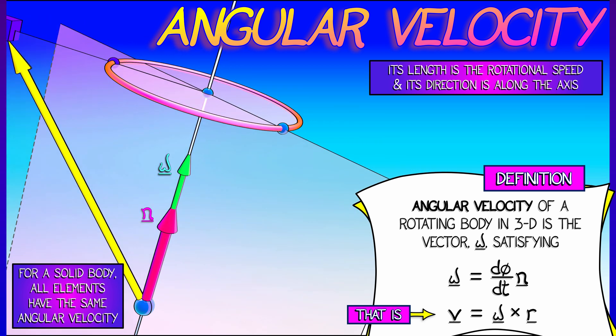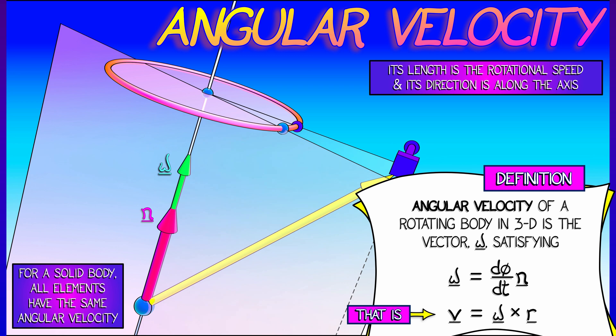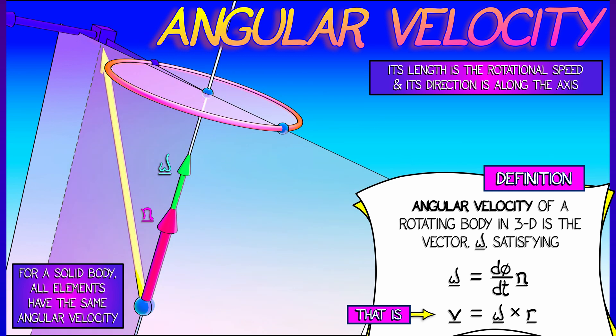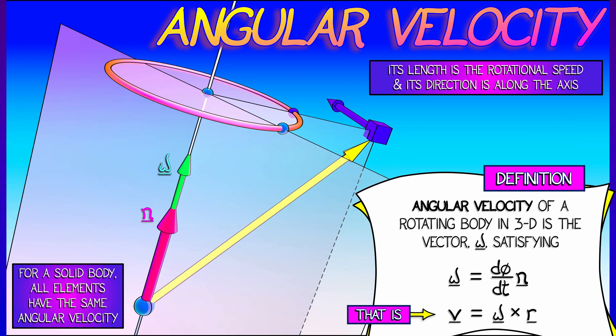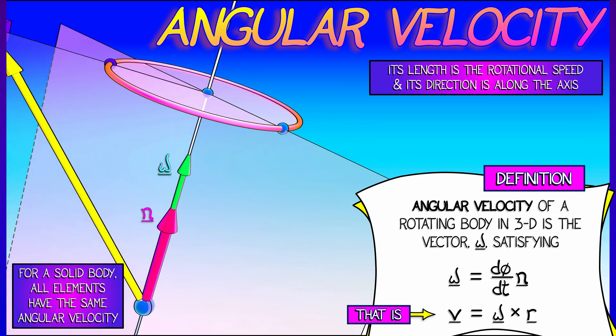Now note that for a solid body, all the elements have the same angular velocity so that we get a well-defined vector. Now, what do we do with it?